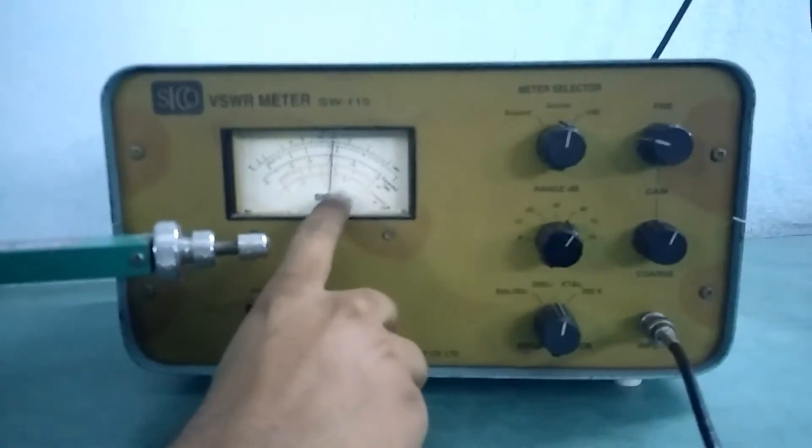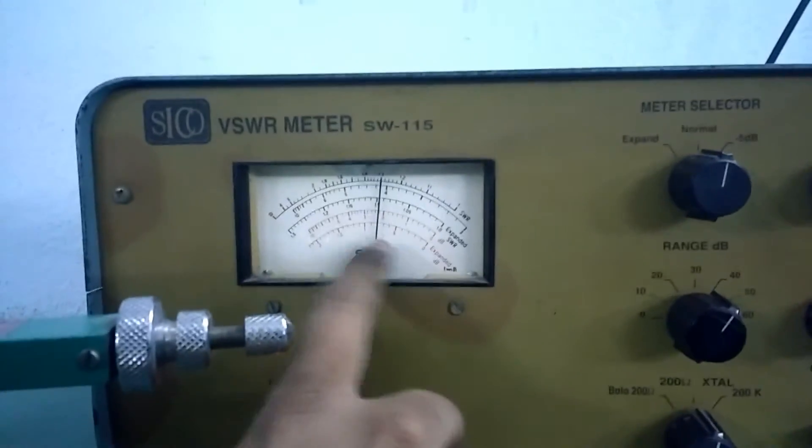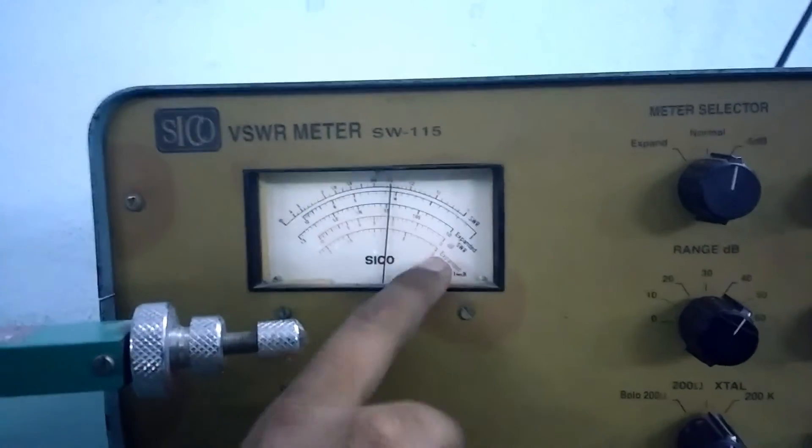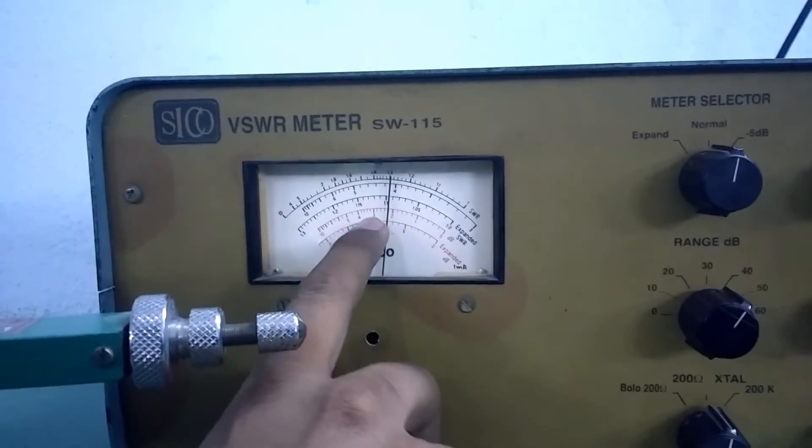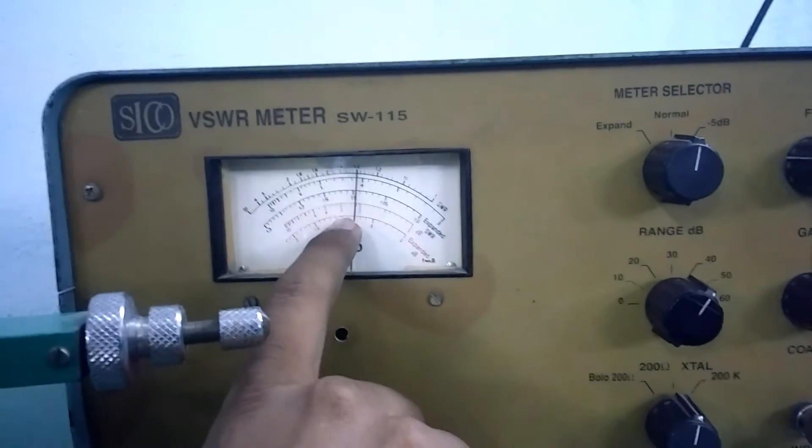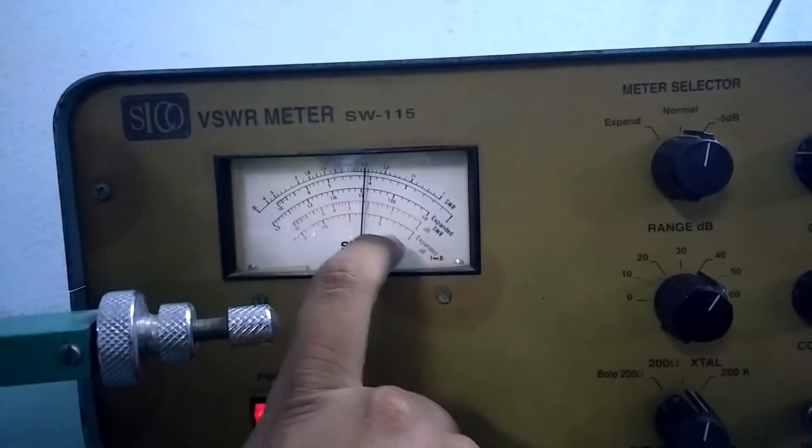And as I have said before, this is the second last scale from the bottom. And this is the second division. So, minus 40 and minus 2, this is minus 42 dB.